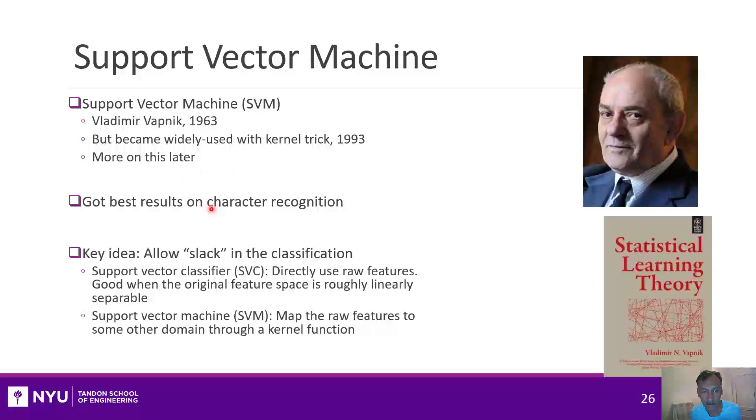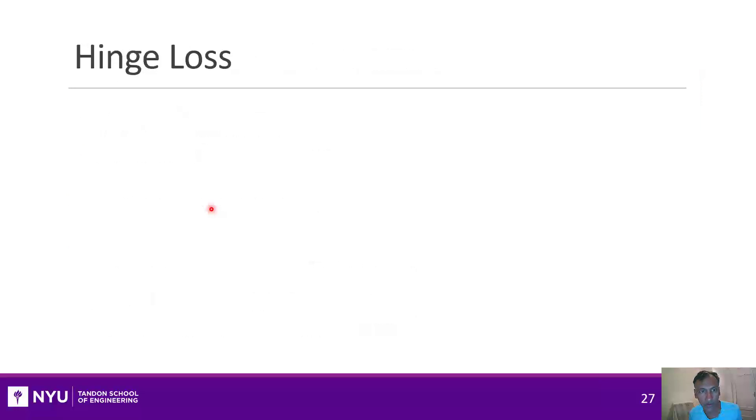The key idea of support vector machines is the idea of slack. We saw that the maximum margin classifier has the problem that it only works when the data is perfectly separable. The concept of slack is that it allows points to be misclassified during training, but that will let it not only just work on non-separable data, but will also improve the generalization error.